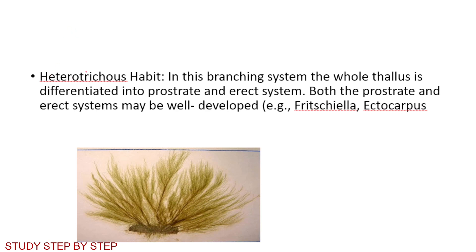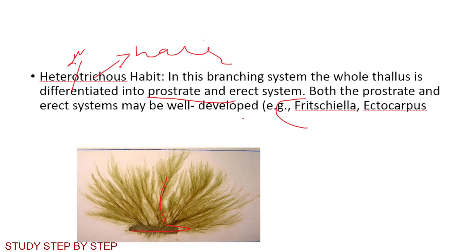Heterotrichous type: the thallus is differentiated into prostrate and erect systems, and both prostrate and erect systems are developed. Examples: Fritschiella and Ectocarpus.